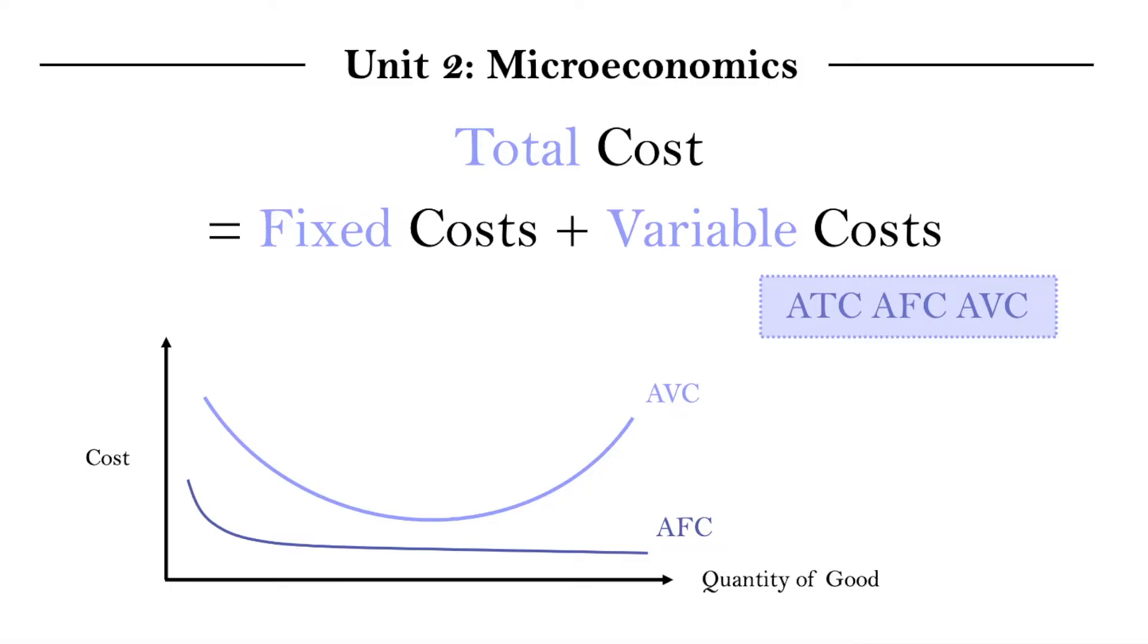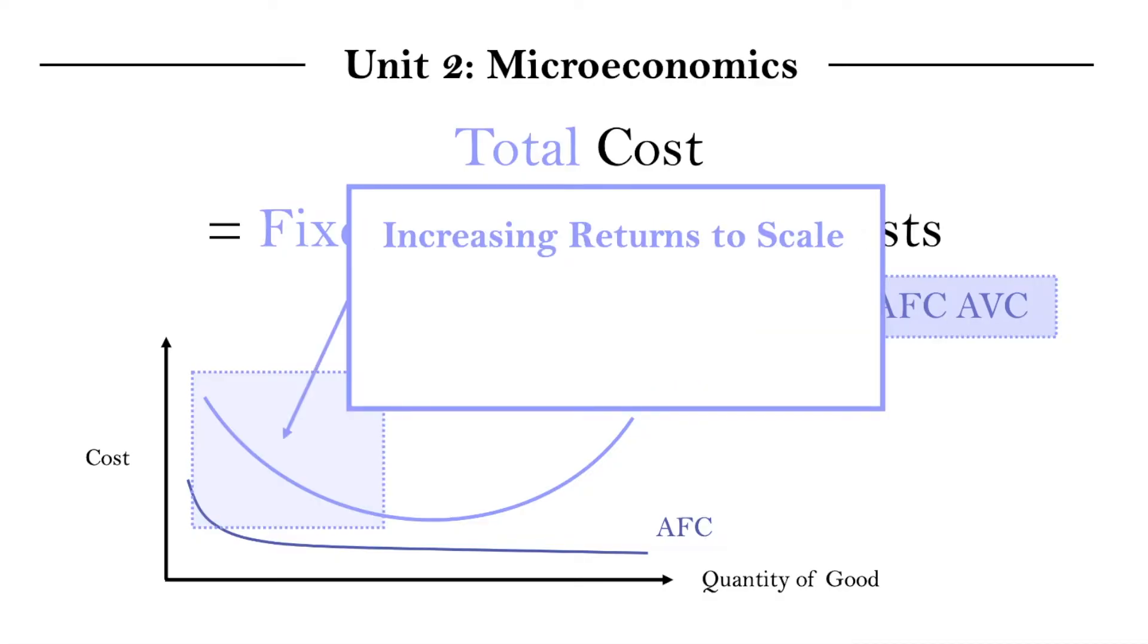The first part of the curve shows a decrease in average variable cost as the quantity increases. And this is because of something called increasing returns to scale. And I don't think this phrase, increasing returns to scale, is explicitly noted in the syllabus. I'm not sure. But just the idea of it helps us understand the shape of the average variable cost curve.